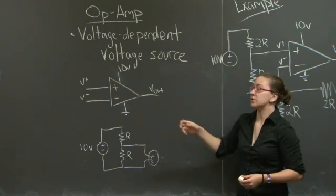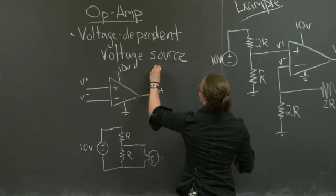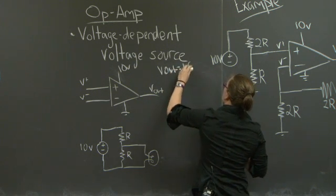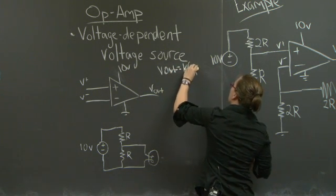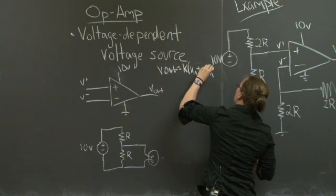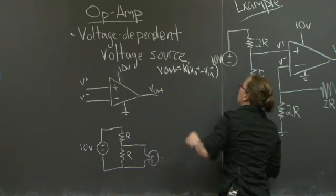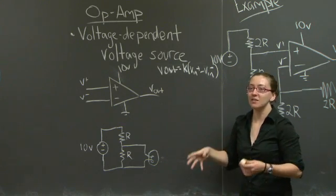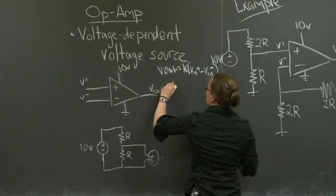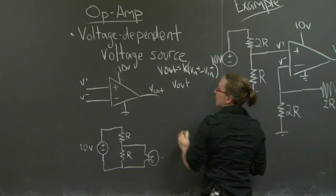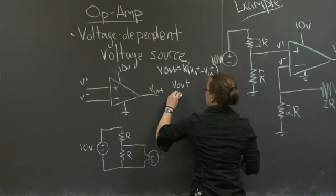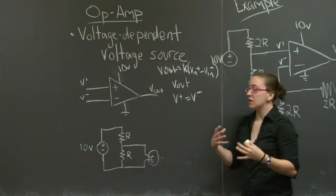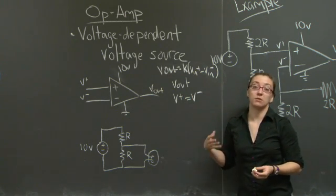In reality, the relationship between the output voltage and the input voltages is something like this, where K is a very large number. The effect that this has is that V out is going to be whatever V out needs to be, such that V plus is equal to V minus. That's the basic rule you want to use when you're interacting with op-amps.